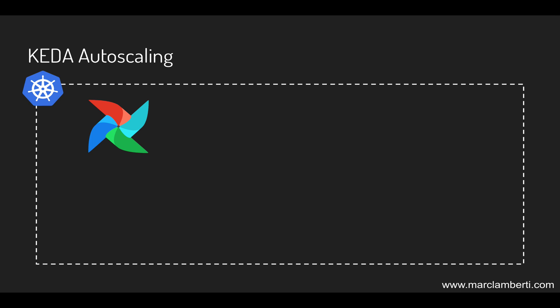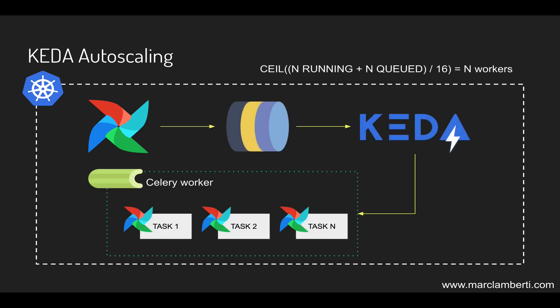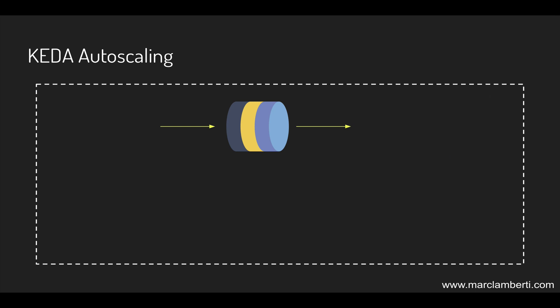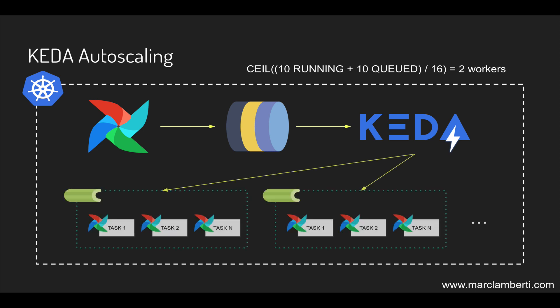KEDA stands for Kubernetes Event-Driven Autoscaler. You install it in your Kubernetes cluster and it will scale the number of workers based on the number of running and queued tasks in the database. Workers can execute multiple tasks at once, unlike a pod where only one task is allowed to run. The number of workers is determined by the equation: (running_tasks + queued_tasks) / 16, using a ceiling function, where 16 is the default number of task instances a worker will take. So for example with 10 running and 10 queued tasks, the cluster scales up to two workers, then back down to zero.